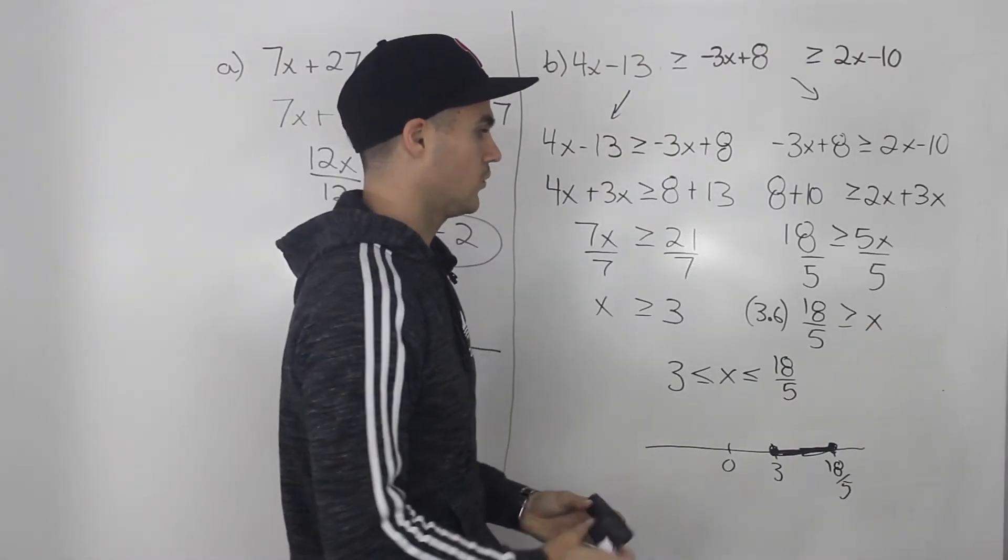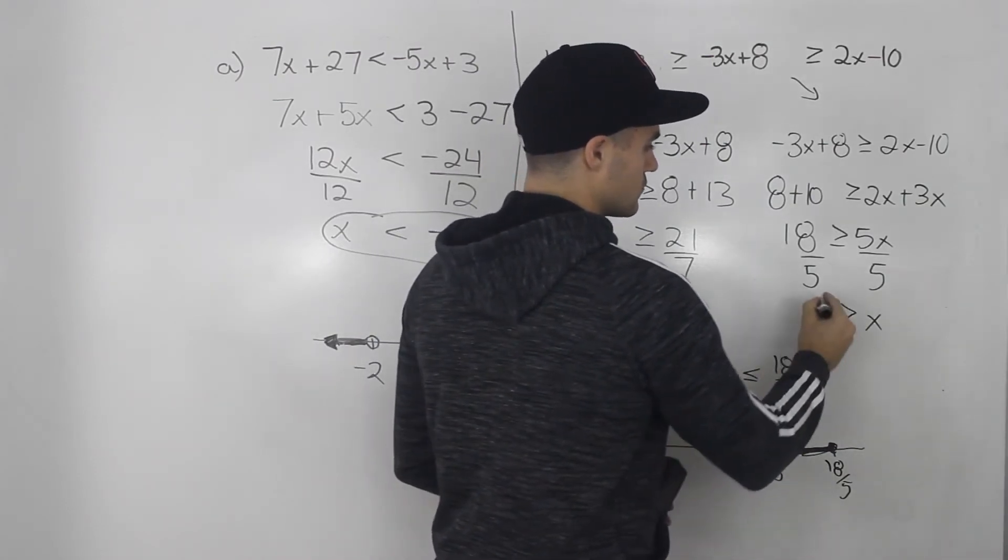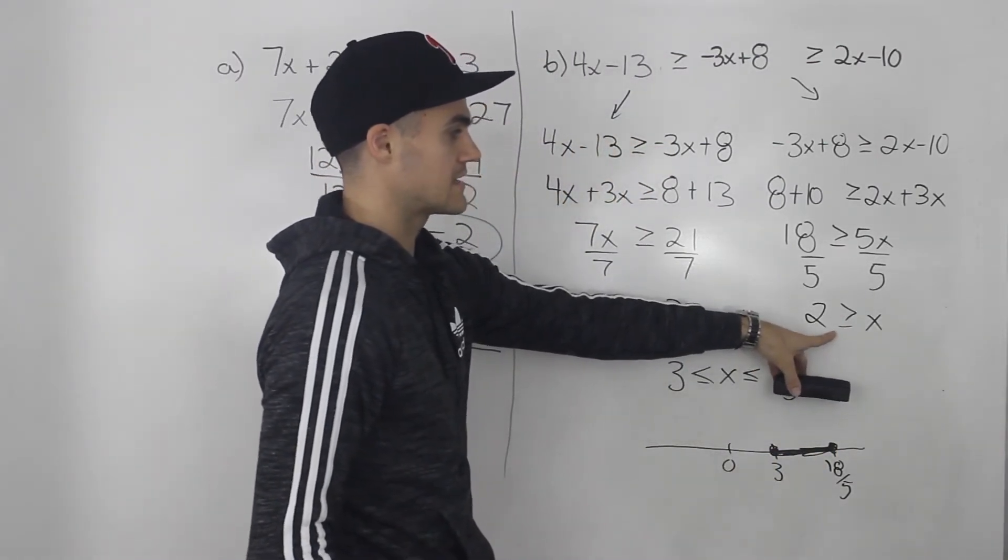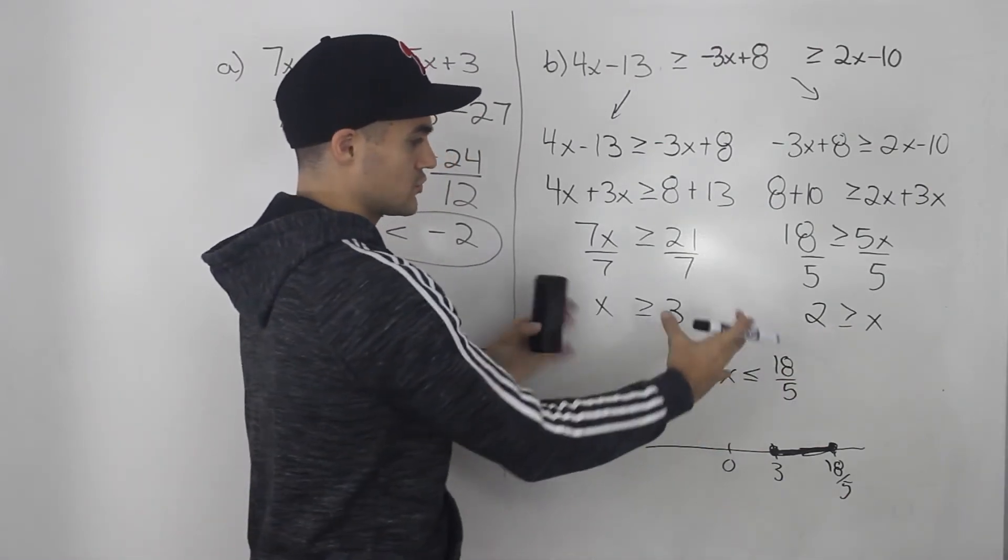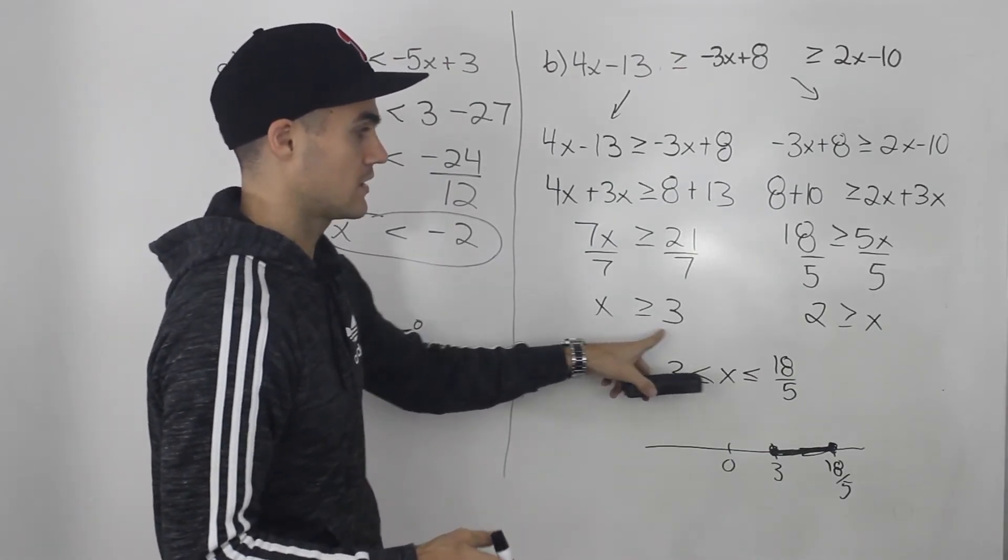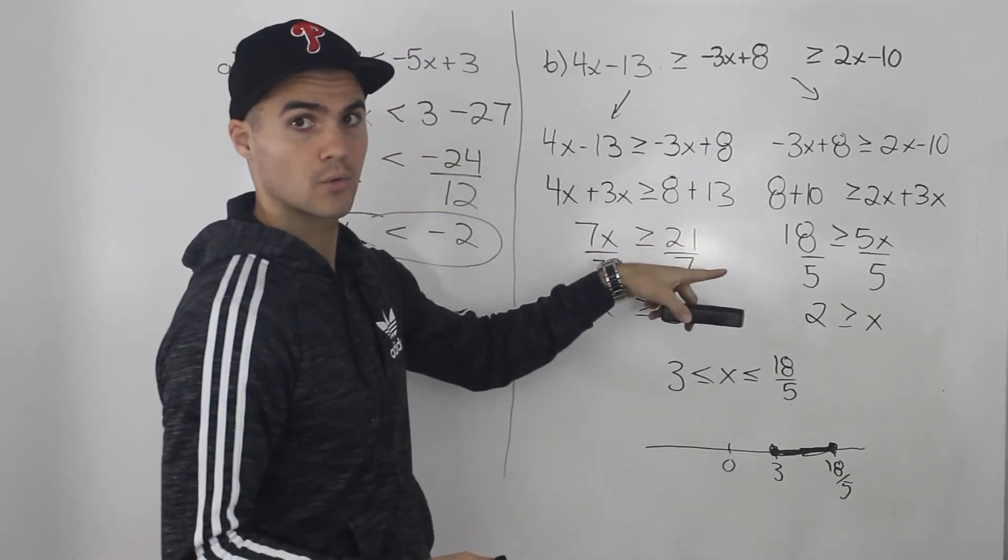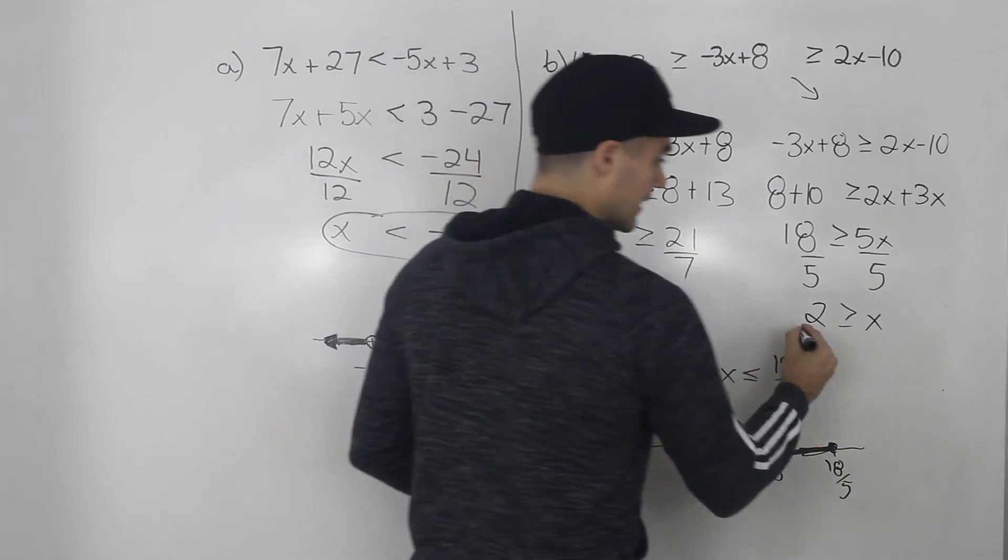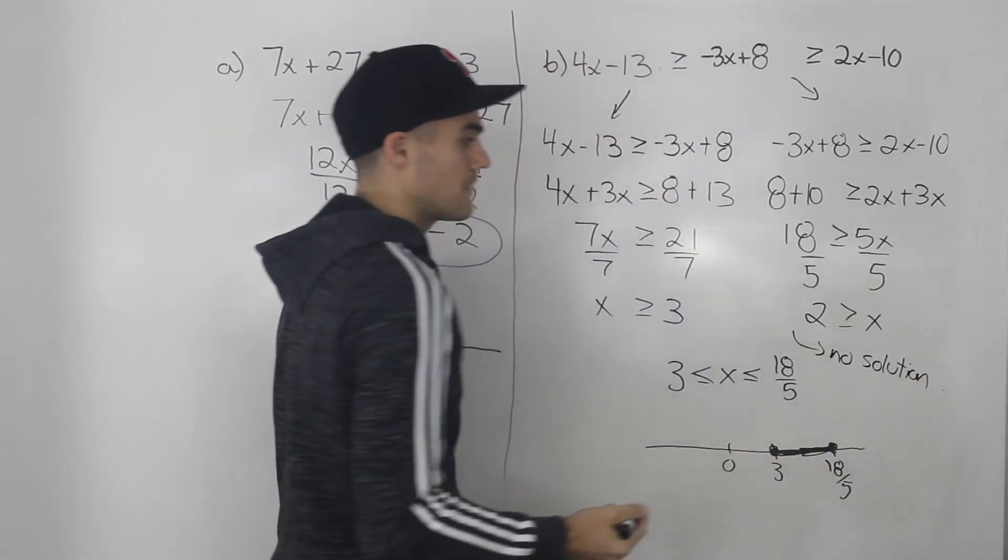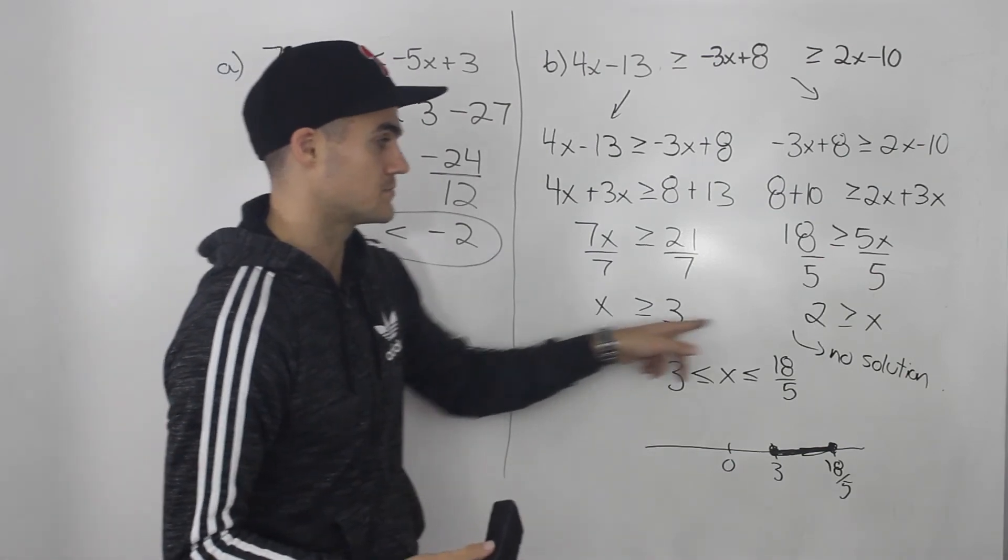Now as an additional remark, what if we got, instead of 18 over 5, let's just pretend that we got 2 here. So x has to be greater than or equal to 3. But here x has to be less than or equal to 2. What would be the solution if we combine them? Well, notice that that's not possible. You can't have an x value that's greater than or equal to 3 and less than or equal to 2. So if you've got both of these with these separate inequalities, and it doesn't make sense, then the answer would be no solution. So just be careful with that. Sometimes you may get solutions for double inequalities that just don't work. That don't make sense. This would be one example.